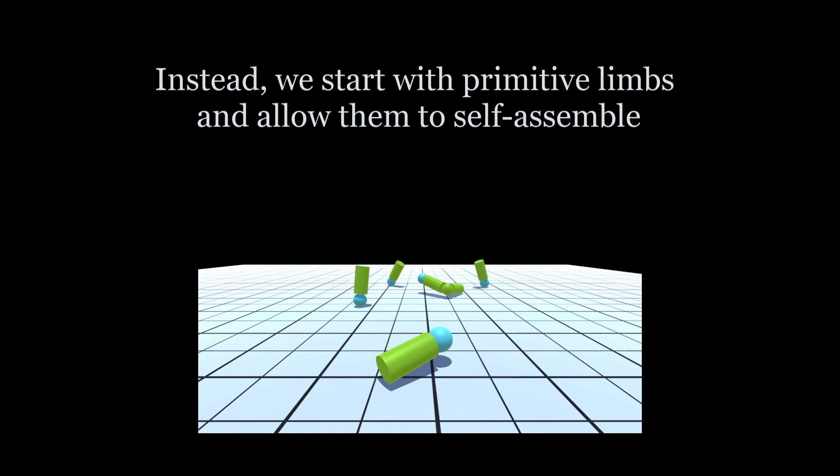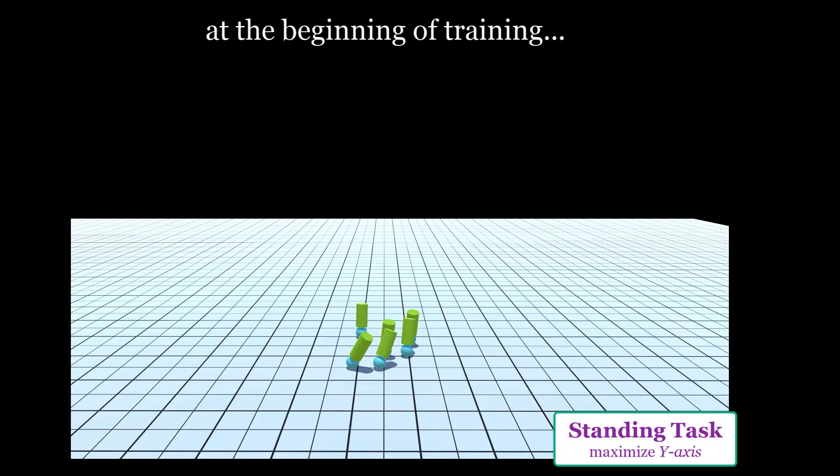In contrast, we propose to treat each limb as an agent and allow them to self-assemble in a modular fashion. At the beginning of training, these limbs can't do much except roll around.